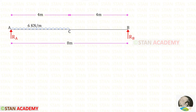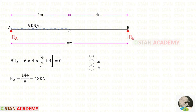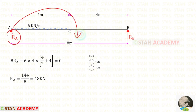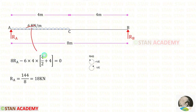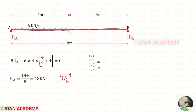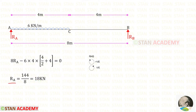Now let us find the vertical reactions in this beam. First I am going to find the vertical reaction RA. For that I am going to take moment about B, following the right hand side rule: clockwise will be positive and anti-clockwise will be negative. RA is acting in the clockwise direction, so it will be positive, and the distance is 8, so 8·RA. The UDL is acting in the anti-clockwise direction so it will be negative, and the distance is 4. We take the half distance: 4/2, then add the remaining distance 4. Finally for RA we have got 18 kilo newton.